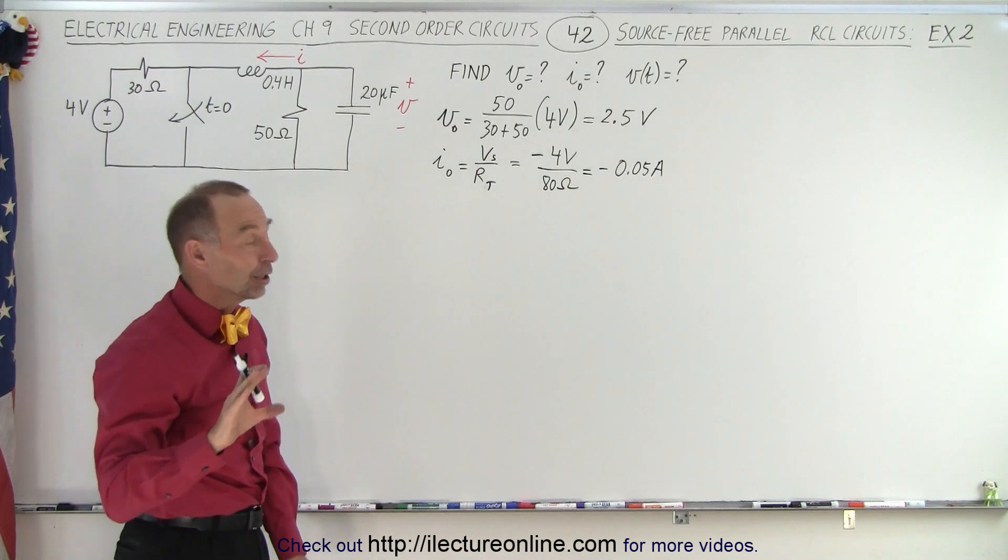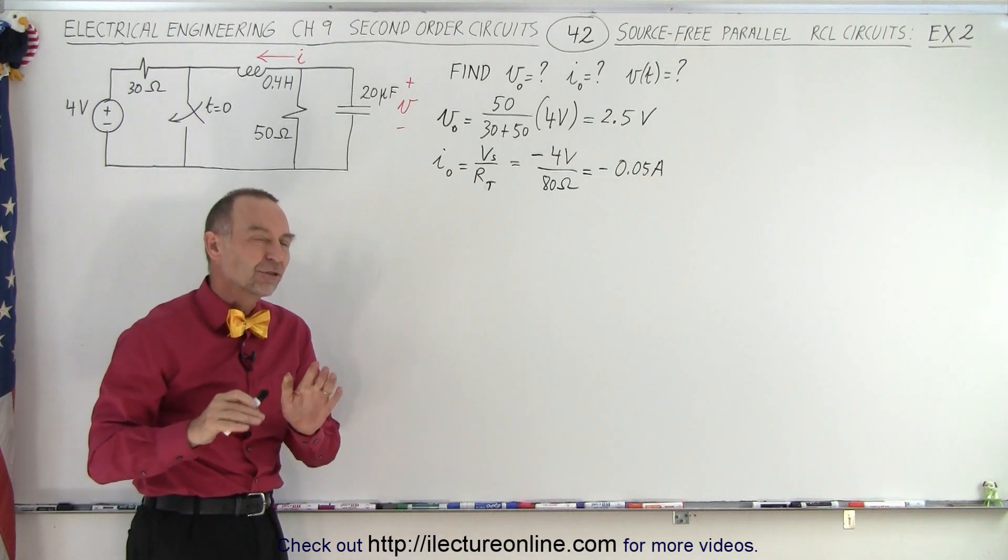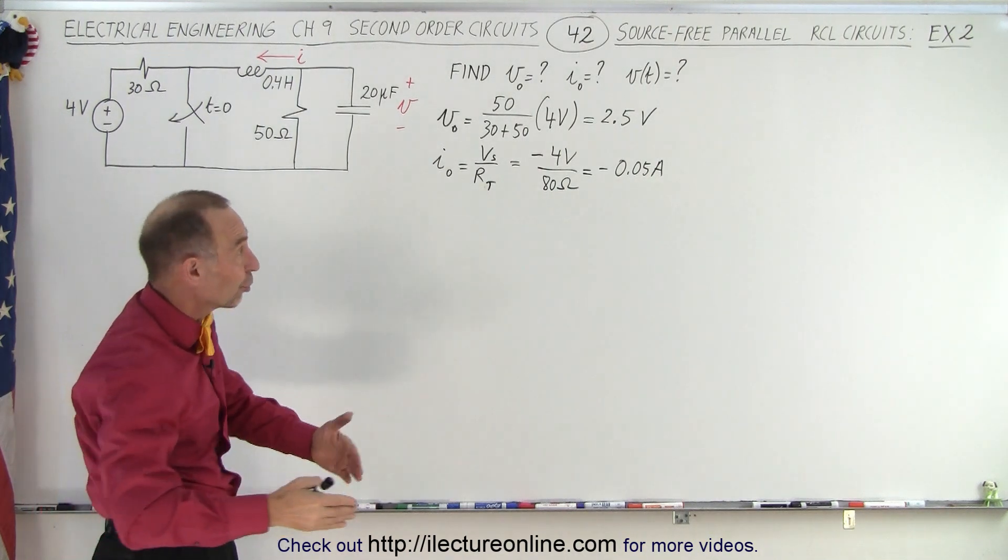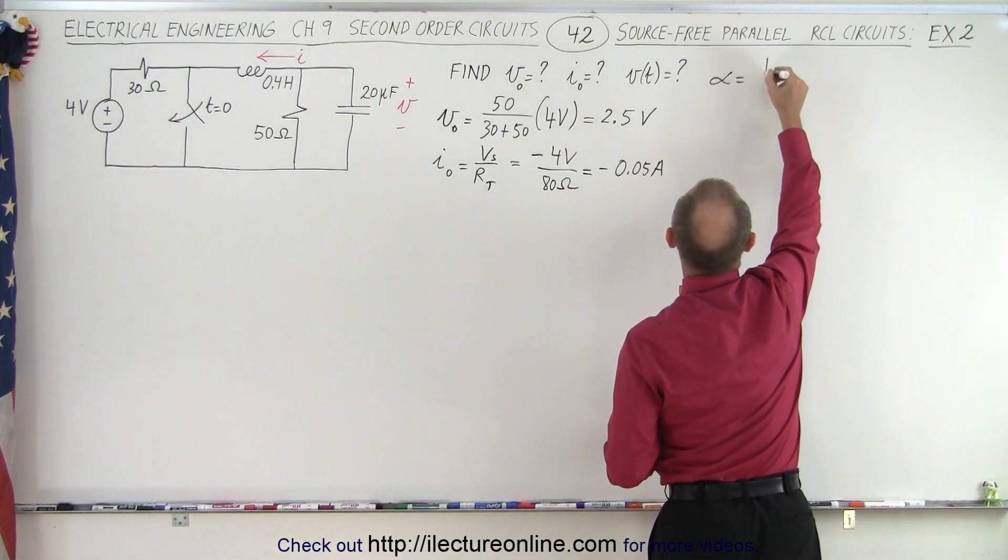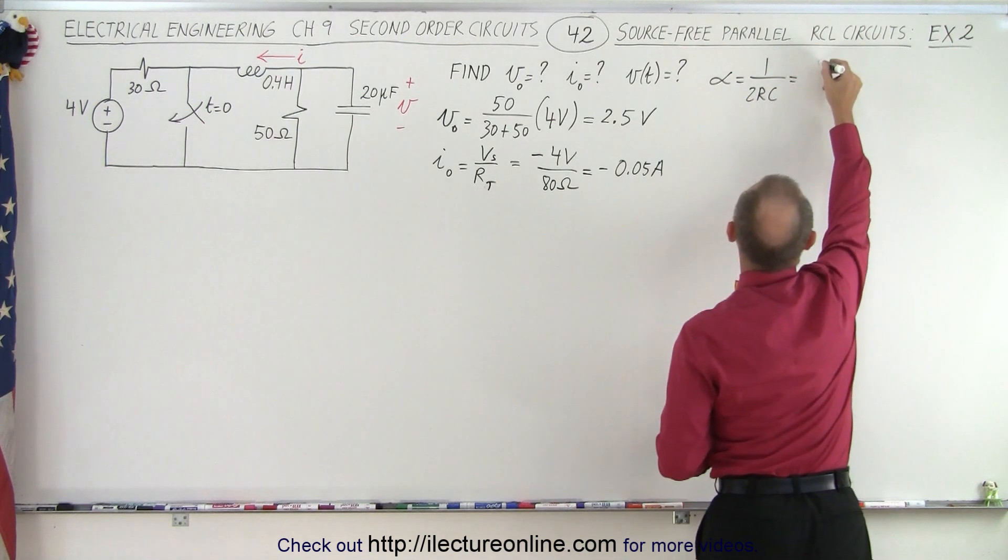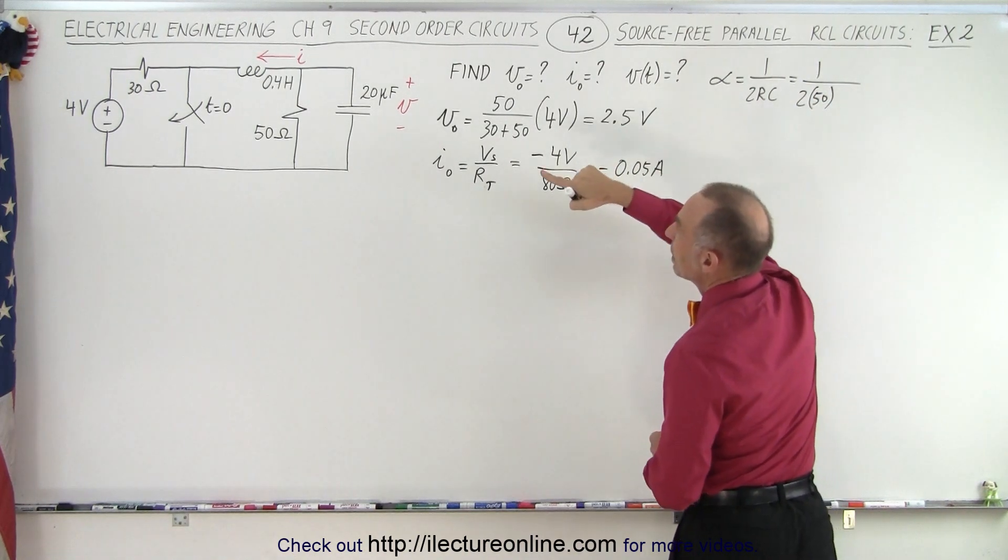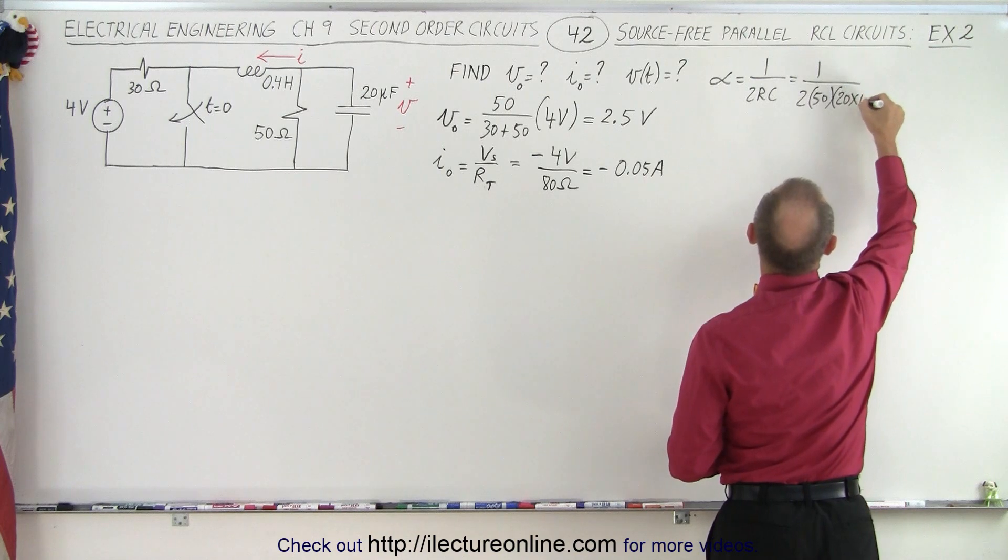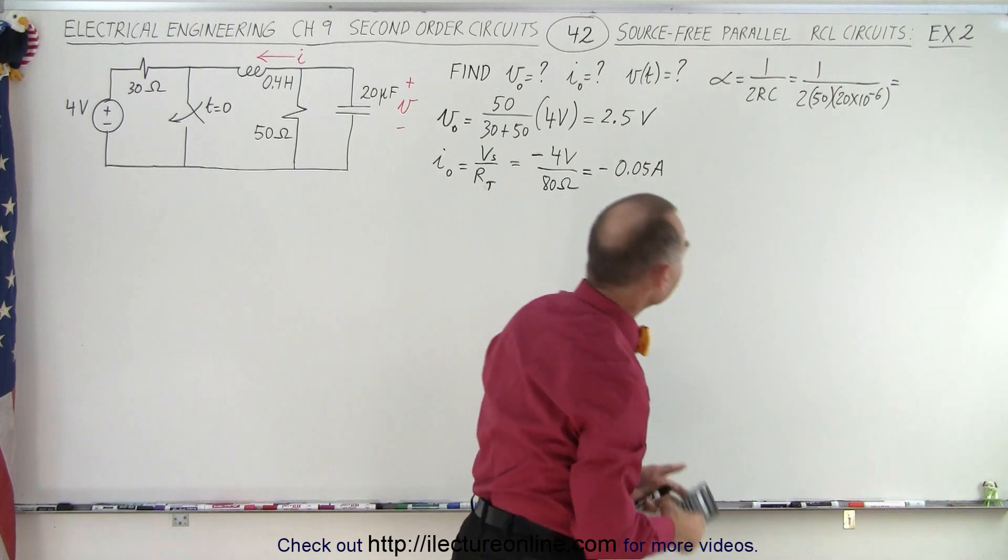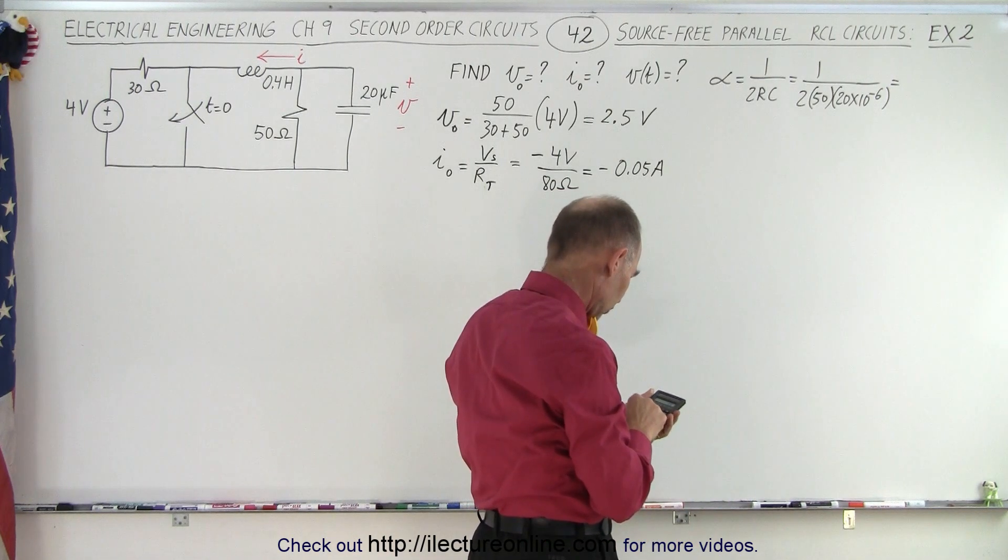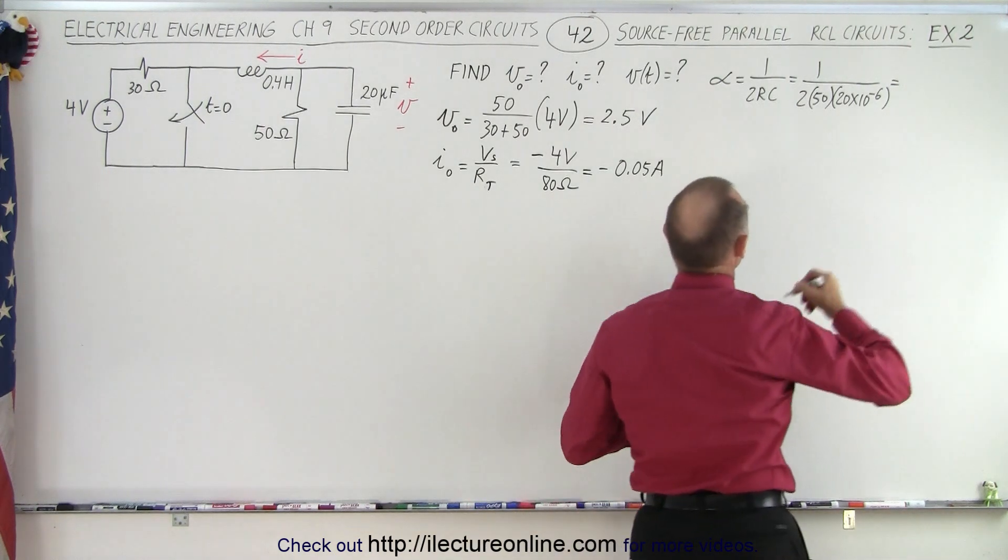Okay, so now we know the initial voltage and the initial current. Now we need to figure out what kind of circuit we're dealing with. Is it an overdamped, critically damped, or underdamped circuit? So what we're going to do is calculate alpha. Alpha is equal to 1 over 2RC, which is equal to 1 divided by 2 times the resistance, this is 50, and the capacitance is 20 times 10 to the minus 6. So that's 100 times 20E6 minus equals, take the inverse of that, 500, so alpha is equal to 500.